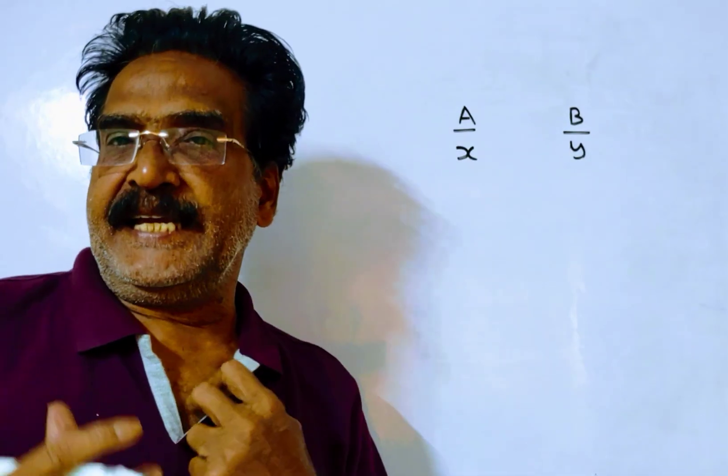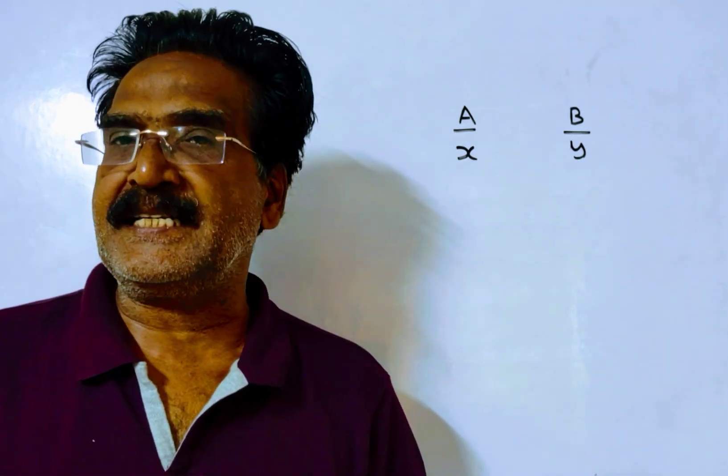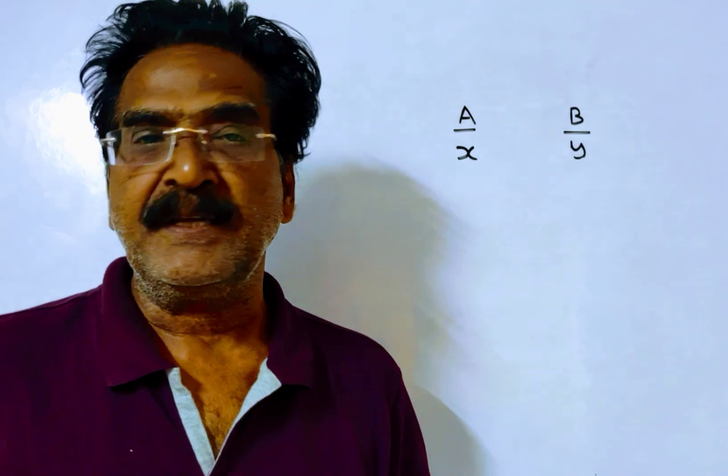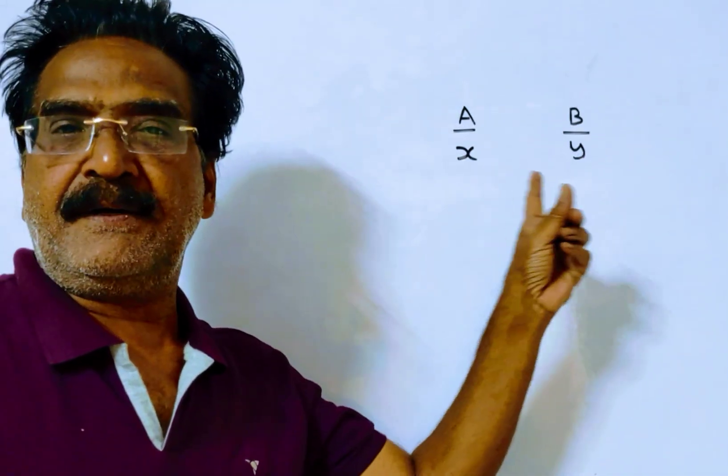See friends, A spends 60% of his salary or income and B spends 75% of his income. Friends, say A's income is X and B's income is Y.